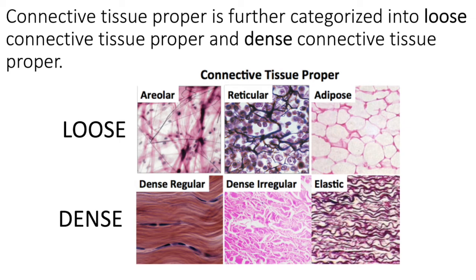The difference between loose and dense is that in loose, there's a lot more ground substance than there are fibers. You have the same number of cells as dense, but it's more sparsely populated with fibers — there's a lot of ground substance and space between the cells and fibers. The dense category is just chock full of fibers, with far less ground substance but the same number of cells, whether they're collagen, elastic, or reticular fibers.